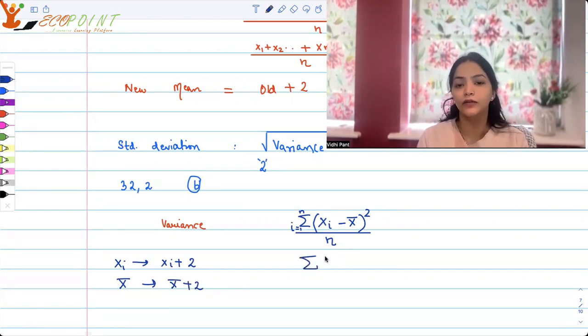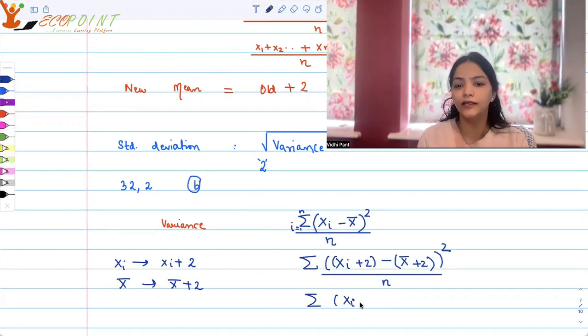So that means the variance would be xi plus 2 minus x bar plus 2 whole square upon n. If you open this up, what will happen? See, 2 and 2 will cancel and we will be left with again xi minus x bar whole square, summation of xi minus x bar whole square upon n. So that means there is no change. Do you understand? There is absolutely no change.